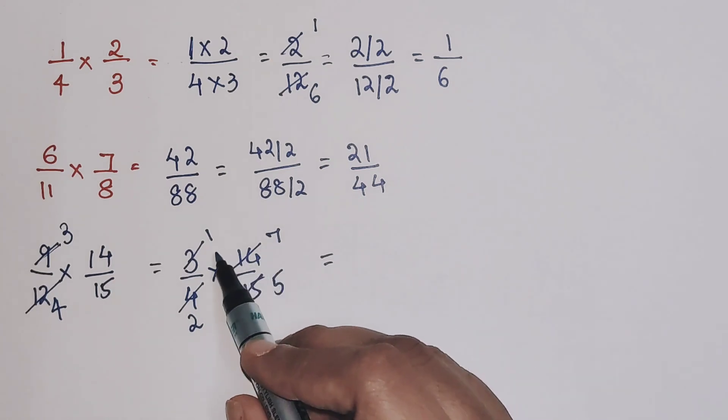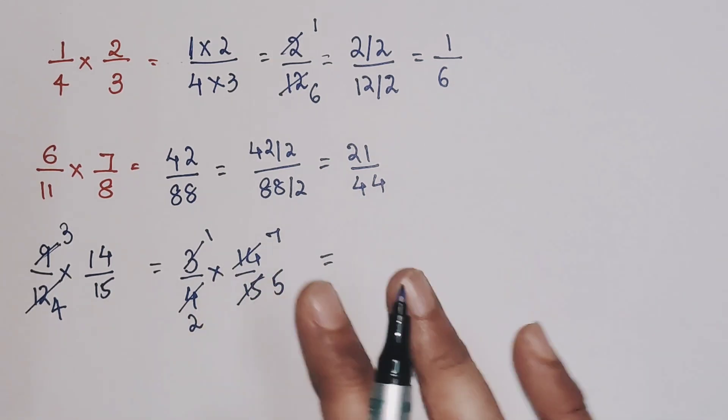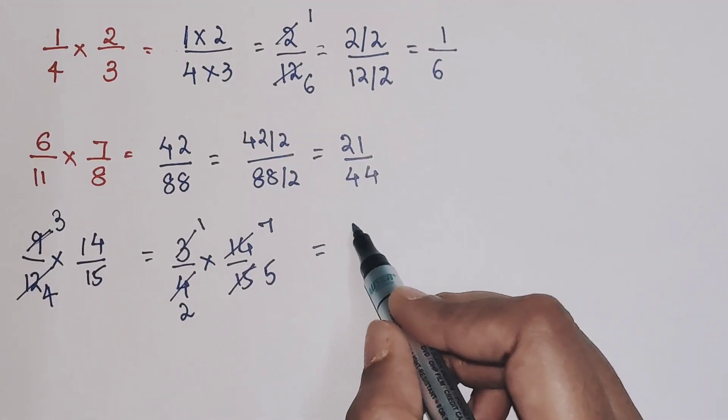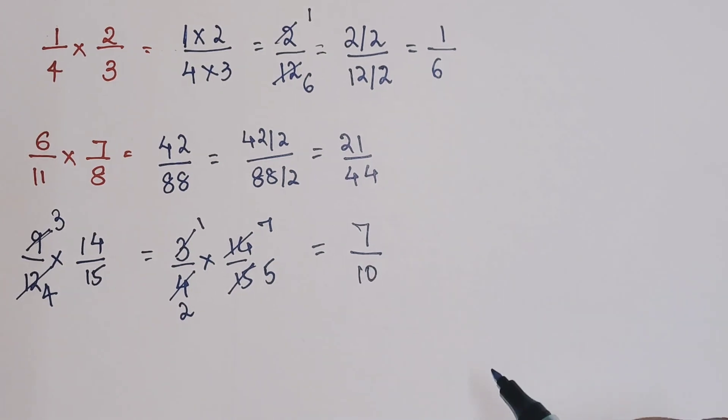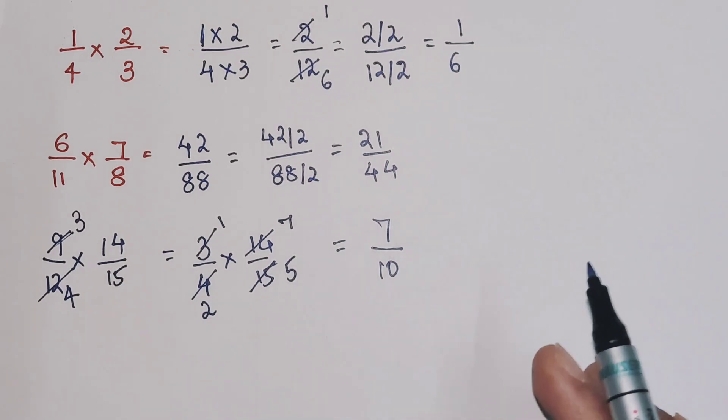You will just multiply the leftover numbers. Nothing which is cancelled is to be considered for your answer. So 1 into 7 gets you 7, and 2 into 5 gets you 10. So that is your answer for this particular multiplication. But you saw how easy this thing became.